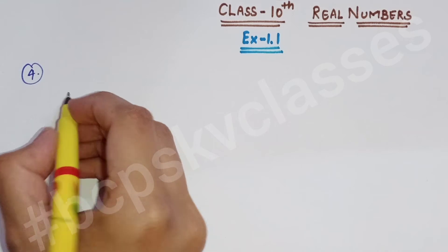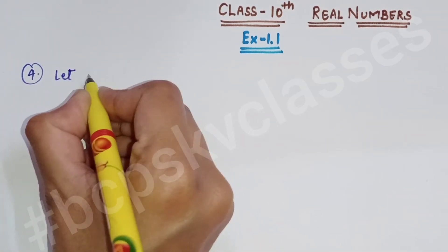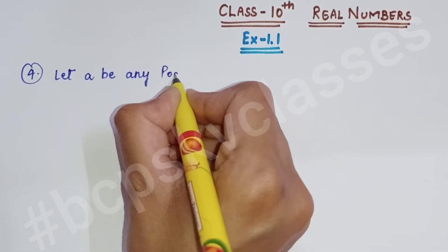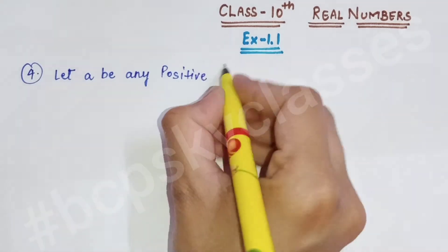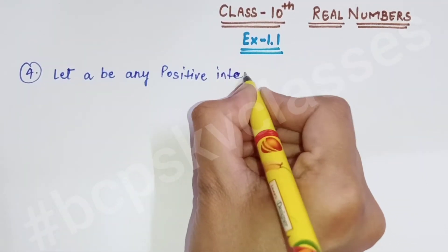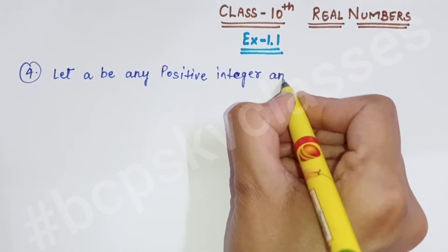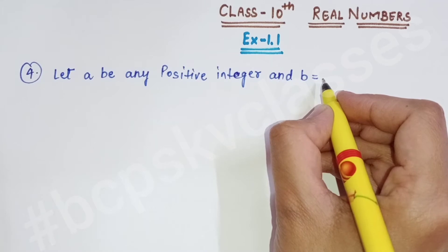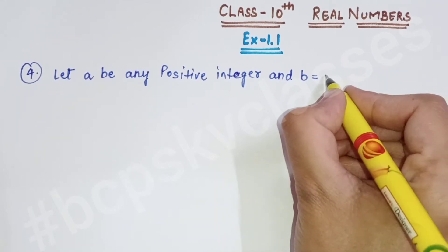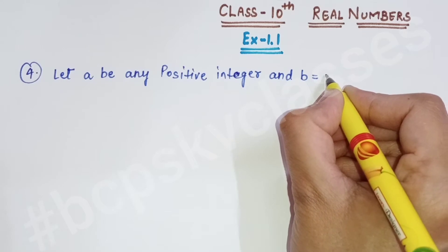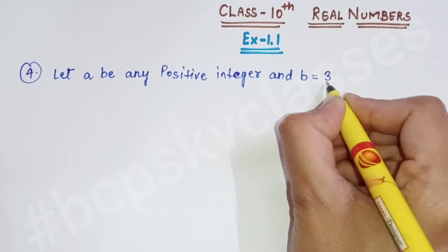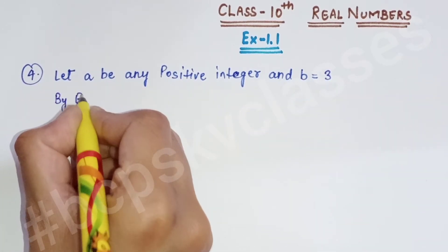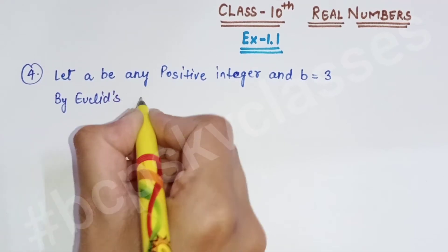Sabse pehle let kar lete hain: let 'a' be any positive integer and b = 3. Question mein 3m aur 3m plus 1 ki form banani hai, to 3 ki form banane ke liye b = 3 let kar lenge. By Euclid's Division Lemma: